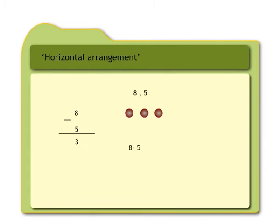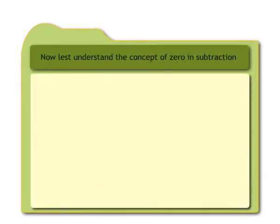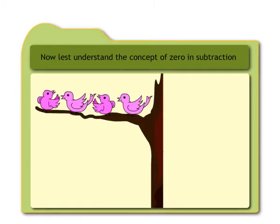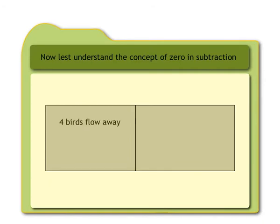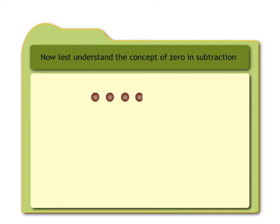Children, now let's understand the concept of zero in subtraction. When we see four birds on a tree and all four fly away, no birds remain — zero birds remained. That is, four minus four equals zero. If I had seven dots and had to score out all seven dots, not even one dot remains — what remains is zero. That is, seven minus seven equals zero.